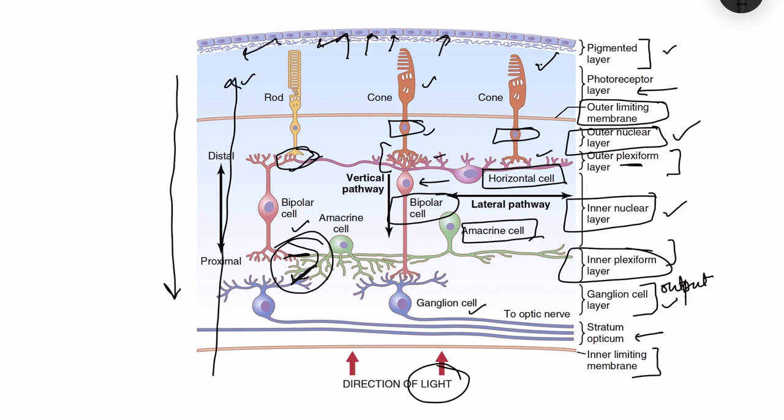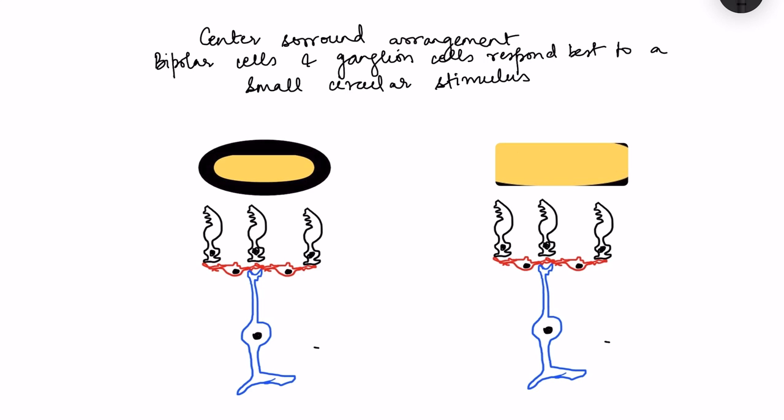With this basic premise, let us move to the connections within the retina and how information processing takes place. In the retina there is something known as the center-surround arrangement, a famous and important topic in physiology. This arrangement is present for both bipolar cells and ganglion cells, and because of it these cells respond best to a small circular stimulus falling in their receptive field.